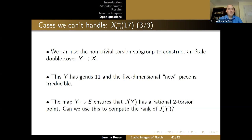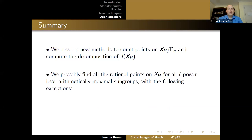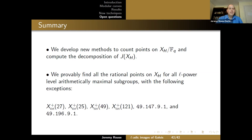In summary, we develop new methods to count points on modular curves and compute their Jacobian decompositions. We provably find the rational points on X_H for all L-power arithmetically maximal subgroups, with exceptions: the non-split Cartan curves at levels 27 and 25, and the level-49 modular curves.